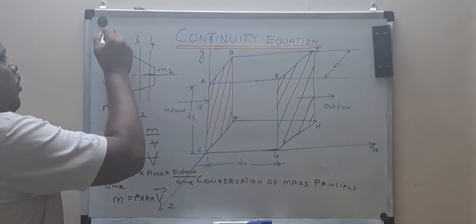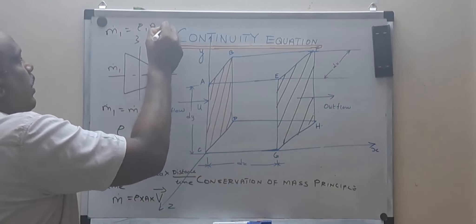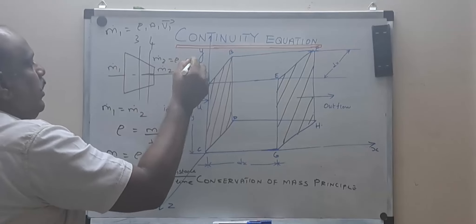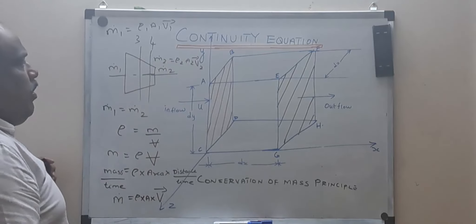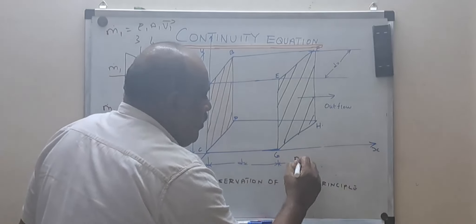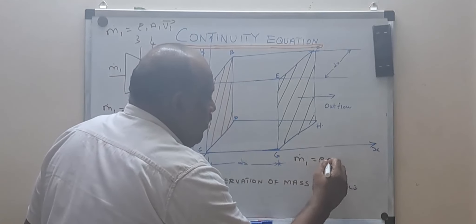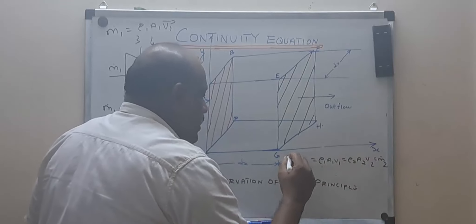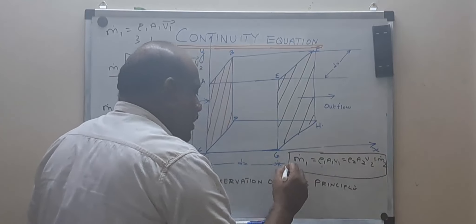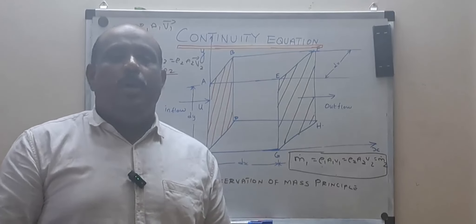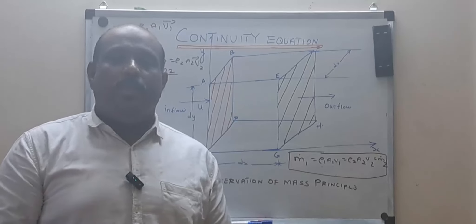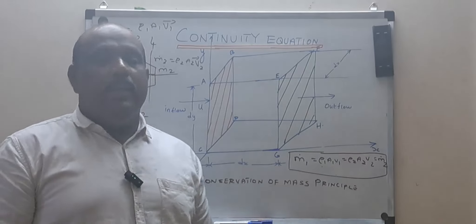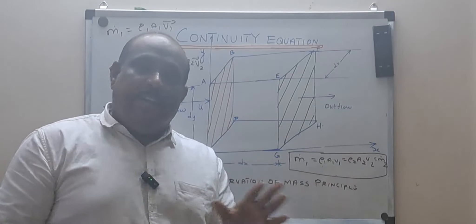If I want to find ṁ₁-dot, it equals ρ₁A₁V₁. If I take ṁ₂-dot, it equals ρ₂A₂V₂. So the conservation of mass principle states: ṁ₁ = ρ₁A₁V₁ = ρ₂A₂V₂ = ṁ₂, which means ρ₁A₁V₁ = ρ₂A₂V₂. Here V₁ and V₂ indicate velocity, not volume. This principle is called conservation of mass, and this equation is called the continuity equation.